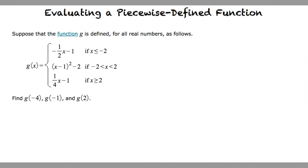Suppose that the function g is defined for all real numbers as follows. g of x equals, first, negative 1 half x minus 1 if x is less than or equal to negative 2. Second, x minus 1 squared minus 2 if negative 2 is less than x which is less than 2. And third, 1 fourth x minus 1 if x is greater than or equal to 2.